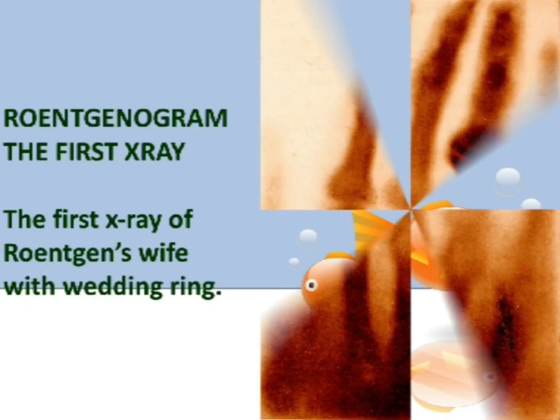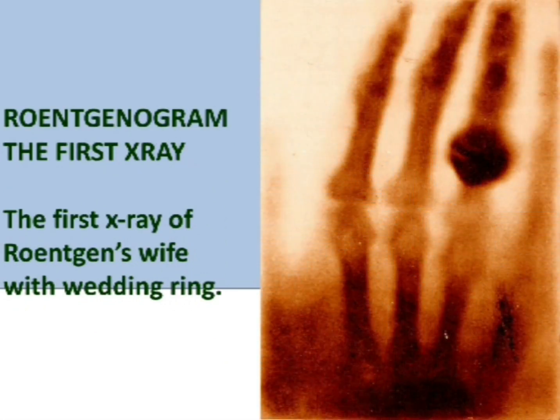From this image you can see the first X-ray ever taken by Röntgen. The X-ray was of his wife's hand, and in it you can see both the wedding ring and the bones of his wife's hand.